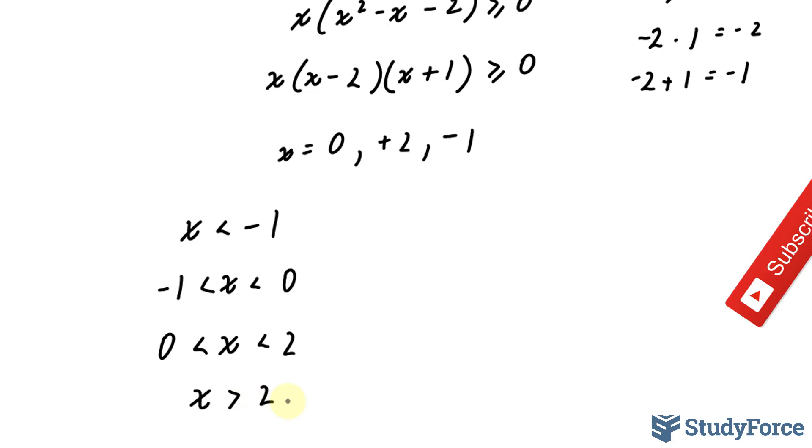Let's go ahead and pick some random test value that is less than negative 1. Let's pick negative 2. For this, we can pick negative 0.5. For this, we can pick 1. And for this, we can pick 3.